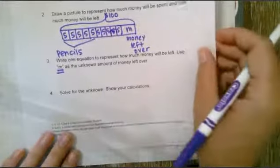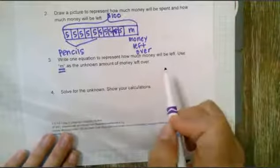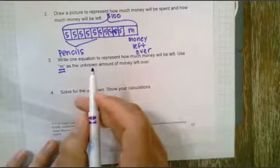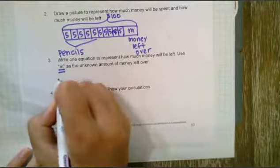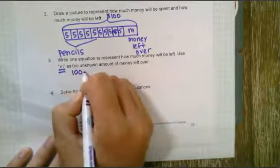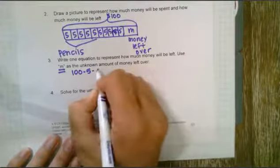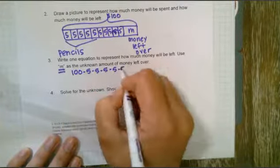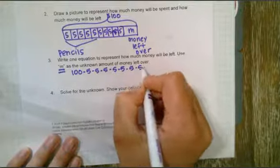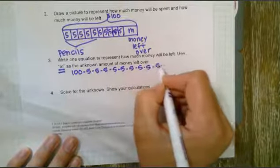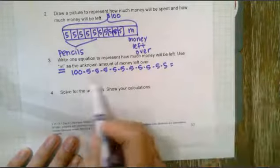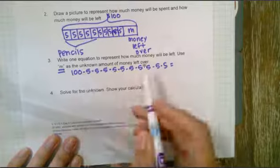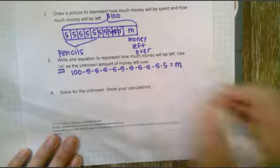Okay, write an equation to represent how much money will be left, and remember we're going to use the letter m as the unknown. So here's my first equation. I could do 100, that's the one I'm starting with, minus 5-5-5-5-5, eight, nine, ten. So I have all my boxes of pencils. I have my starting dollar amount and if I subtract all that I'm going to have m, my money left over.